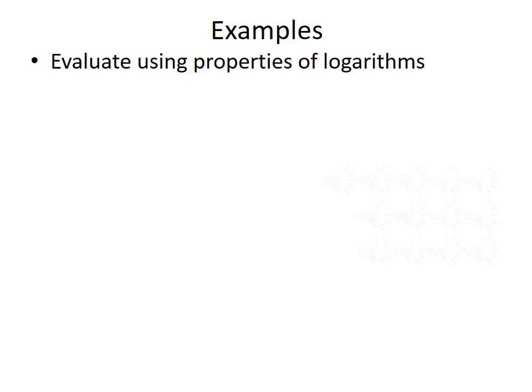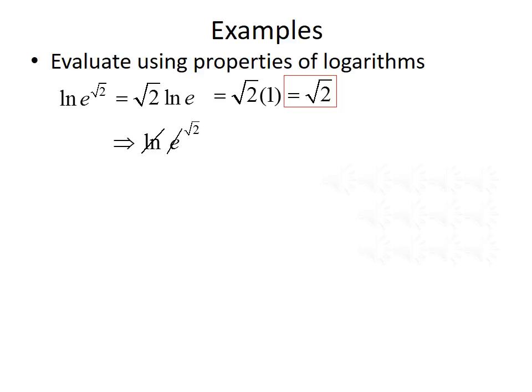Let's do a few examples using the properties of logarithms. First, we want to evaluate the natural log of e raised to the square root of 2. We can use the power property to bring the exponent out, giving us the square root of 2 times the natural log of e. Since the natural log and e have the same base, we use the second property, giving us the square root of 2 times 1, which simplifies to the square root of 2. Alternatively, since we're evaluating the natural log of an exponential with the same base, they cancel, leaving just the exponent — the square root of 2.